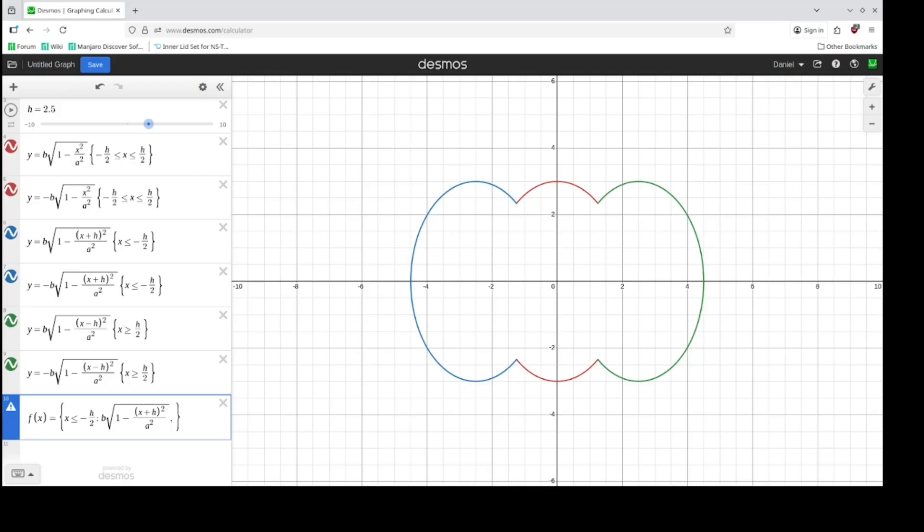And for x that's between minus h over 2 and positive h over 2, we'll use this top right ellipse here. And then for x that's greater than or equal to h over 2, we'll use this green ellipse.